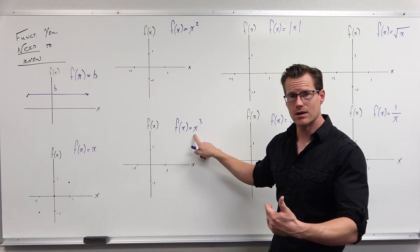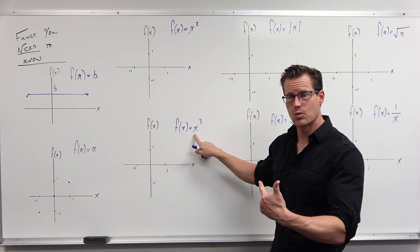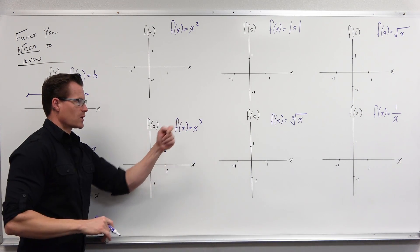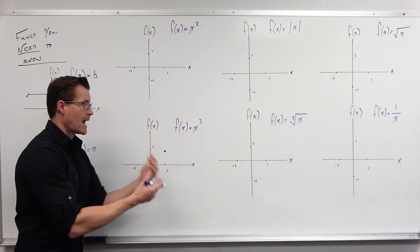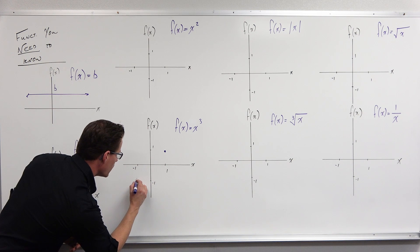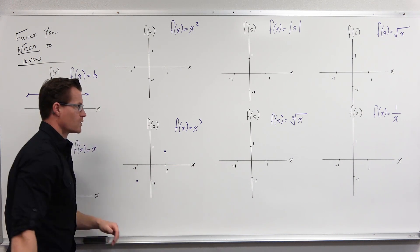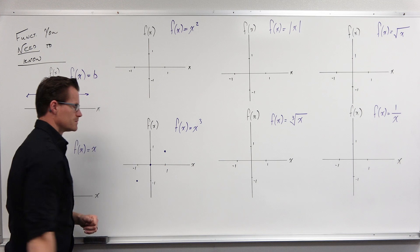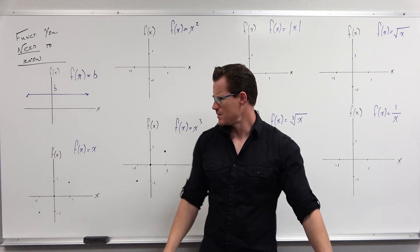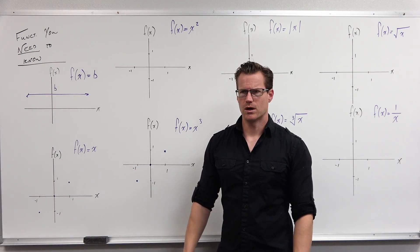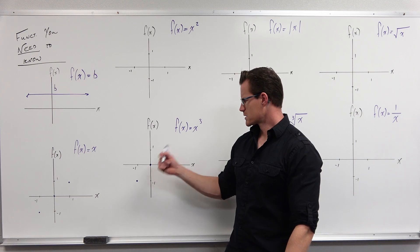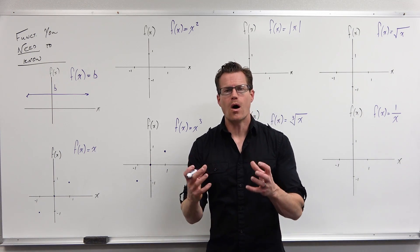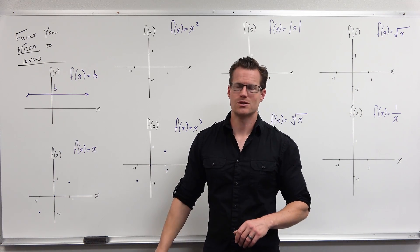Take f(x) = x³. Plug in 1 — 1 cubed is 1, so it has (1, 1). Plug in negative 1 — negative 1 cubed is negative 1, so it has (-1, -1). Plug in 0 — it has (0, 0). That's the same exact key points as f(x) = x: (1,1), (0,0), (-1,-1). Every odd basic graph shape is going to have those key points.